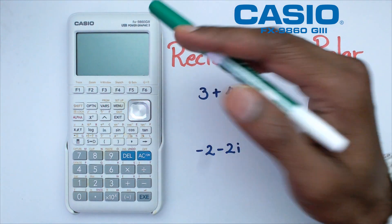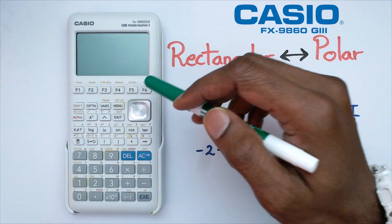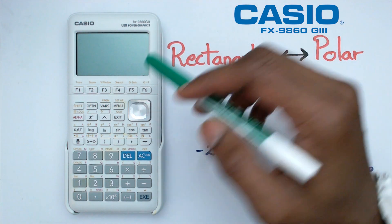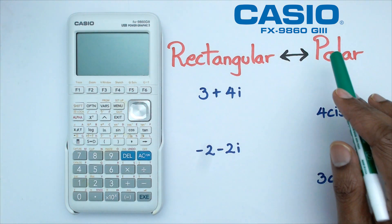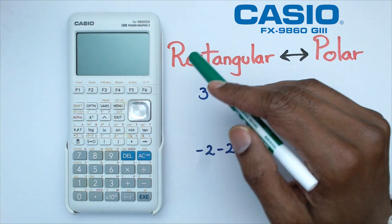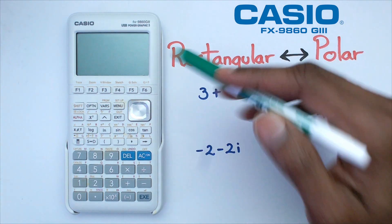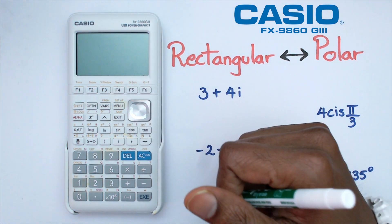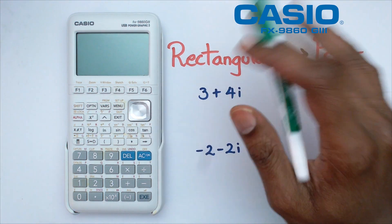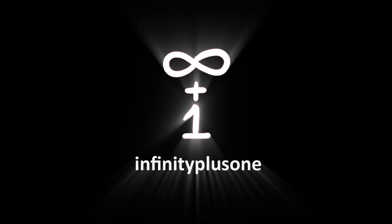Hey folks, welcome to another How To Casio video. In this video we're going to be looking at complex numbers and going between rectangular to polar form and then from polar form to rectangular form, and we're going to look at how to do this in this particular Casio graphics calculator. So without further ado, let's get started.